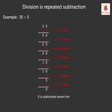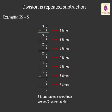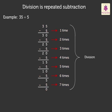Here, 5 is subtracted repeatedly 7 times from the number 35 to get the remainder as 0. This process of repeated subtraction is called division.